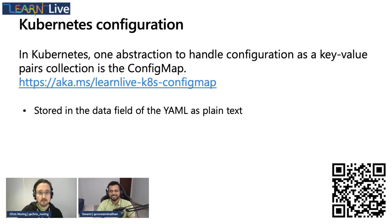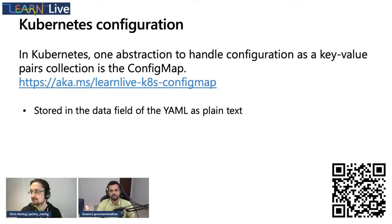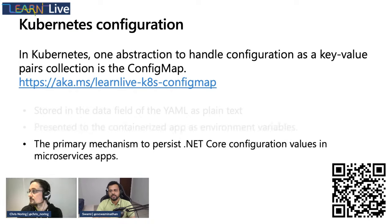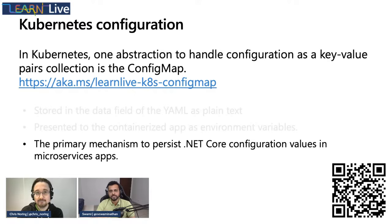To create a config map, you create a YAML file — same syntax as deployment.yaml or service.yaml — specifying the config map name and data. When the container starts, the values are presented as environment variables. This is the primary mechanism to inject configuration for a .NET Core application in Kubernetes. We recommend using config maps to externalize configuration. In the demo, we won't rebuild the image every time — we'll only change the config map and redeploy it, and the application will start working automatically.